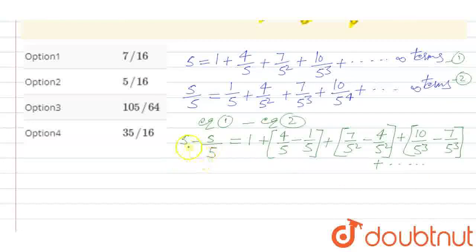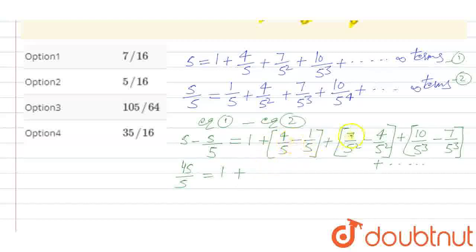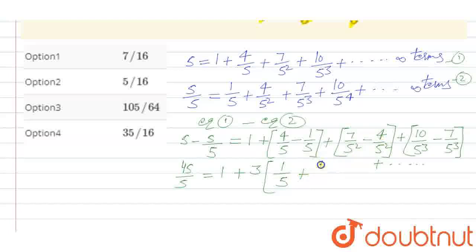So this becomes: S - S/5 is 4S/5. So 4S/5 = 1 + the numerator differences: 4 minus 1 is 3, 7 minus 4 is also 3, and 10 minus 7 is also 3. We can take 3 common from the numerator, giving 1/5 + 1/5² and so on, with LCM of 5.